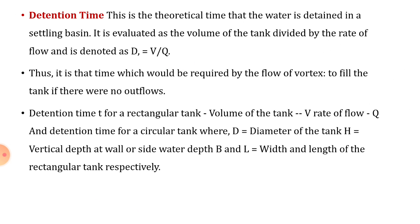The volume of water flowing in unit time per unit surface area of the settling basin is known as surface overflow rate, also called overflow rate. It is given by flow rate in meters per second divided by settling surface area in meter square. Detention time is the theoretical time that the water is detained in a settling basin. It is evaluated as the volume of the tank divided by the rate of flow, denoted by D = V/Q. Thus it is the time required by the flow to fill the tank if there were no overflow or outflow. Detention time T for the rectangular tank uses volume of tank V and rate of flow Q; for the circular tank, D is the diameter, H is the vertical wall depth, and B and L are the width and length of the rectangular tank respectively.